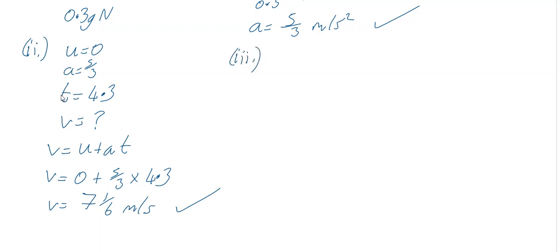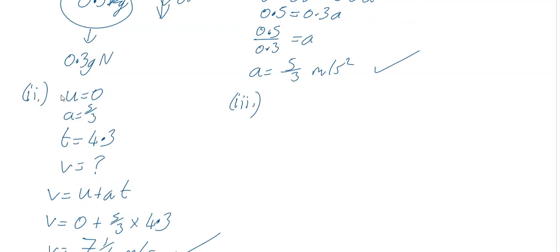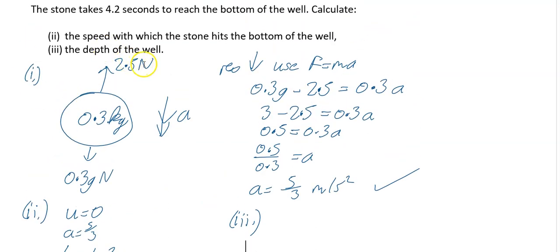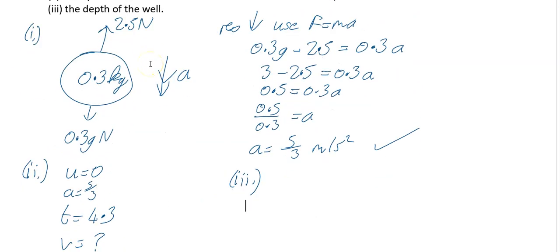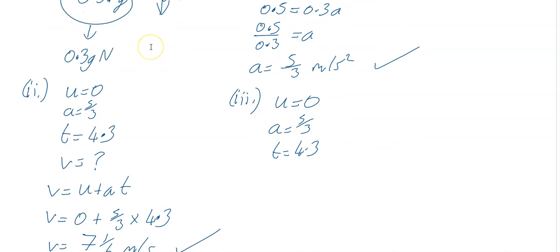Part three of that question. Part three says calculate the depth of the well. So we know lots of stuff already. We know your U is equal to zero. You know your A is five over three. You know your T was 4.3. And what you want to find is the depth of the well, so that's distance, so that's our displacement really. So that's what we're trying to find.